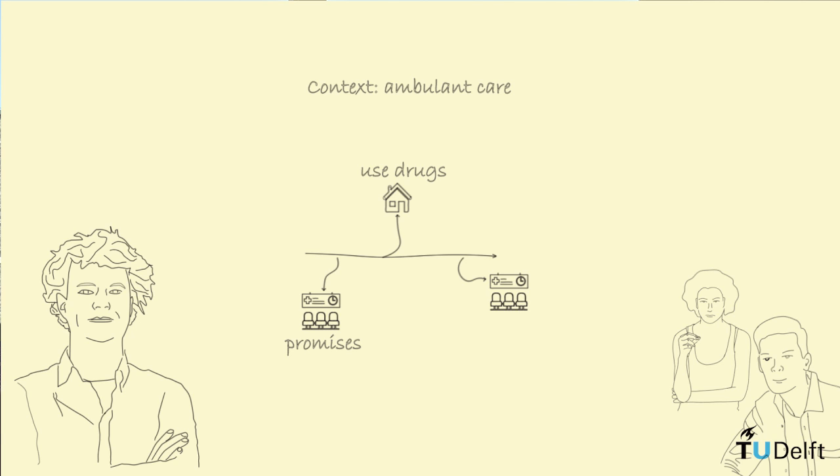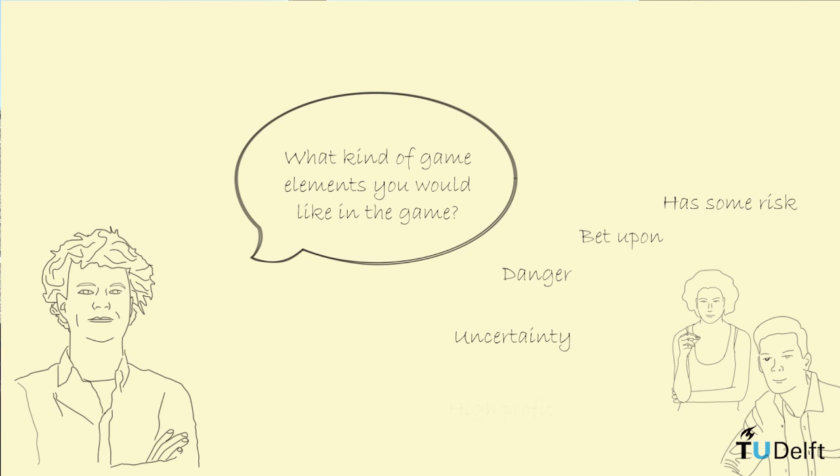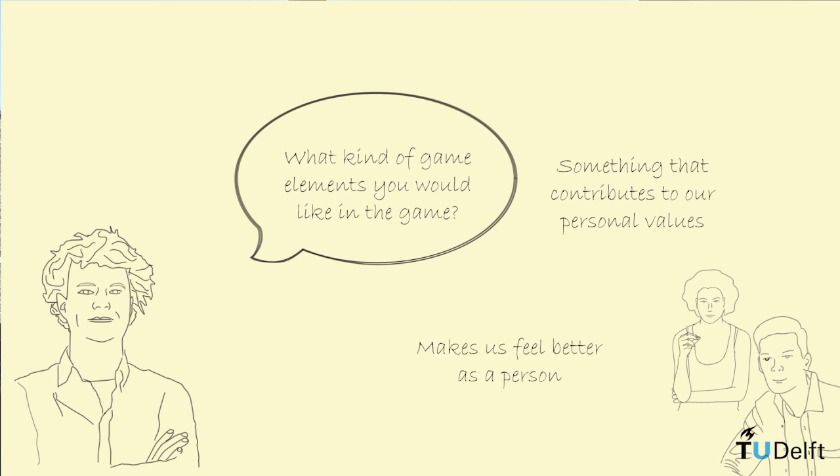So this ambulant care context was a little bit difficult. We then performed a small user experience experiment in which we tested what kind of game elements would be favored by the different stakeholders. We asked a group of patients, what kind of game elements would you like to appear in the game? And these patients said, we would like something that has some risk in them. Something that we can bet upon, that it's not certain that we get it, that there's some danger in it because we like a little bit of danger and uncertainty, and then we can get some high profit. So that was the kind of wager game element. And they also said, we like something that contributes to our personal values, to something that makes us feel better as a person.